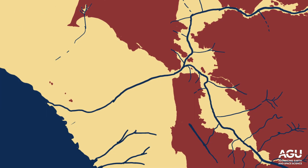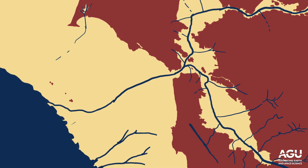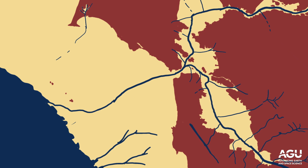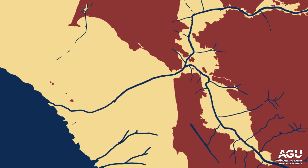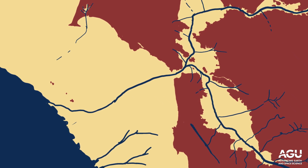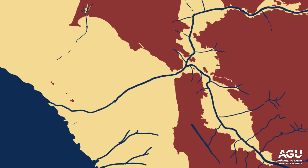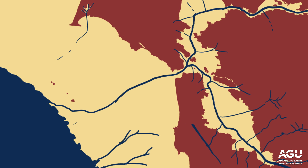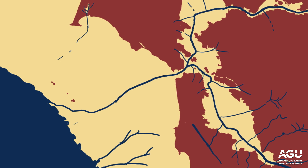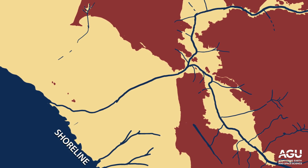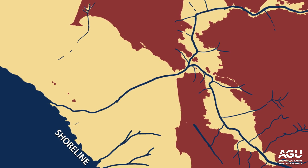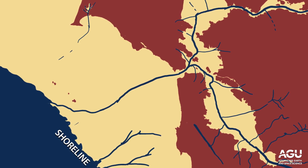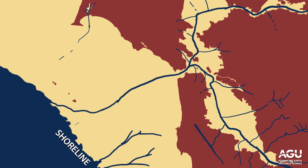Around 25,000 years ago during the last glacial maximum, large ice sheets covered much of the northern hemisphere and ocean level was much lower. That meant the shore of North America was far out into the ocean, as we see it today near the Farallon Islands.